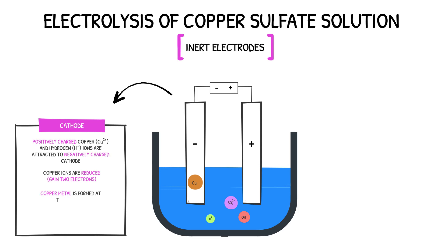This formation of copper metal is confirmed as the cathode changes to a brownish colour. The half equation for the reaction at the cathode would look like this, where a copper ion gains two electrons to form a copper atom.